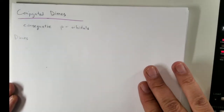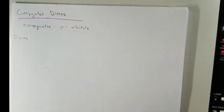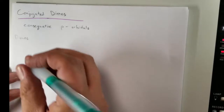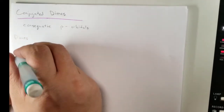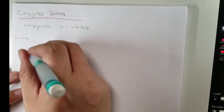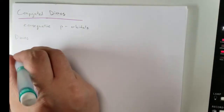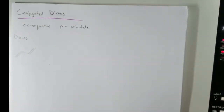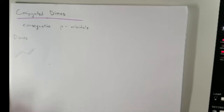So conjugated dienes — let's go ahead and take a look at the different types. The main one we're going to be concerning ourselves with is this type: where we have double, single, double. That's referred to as being conjugated.